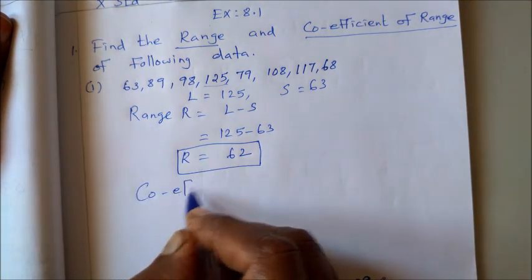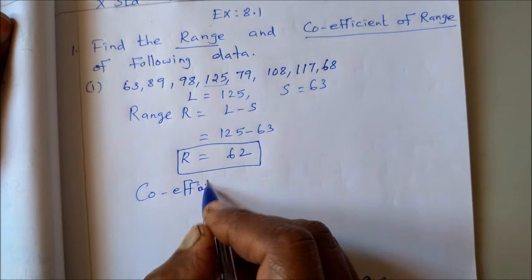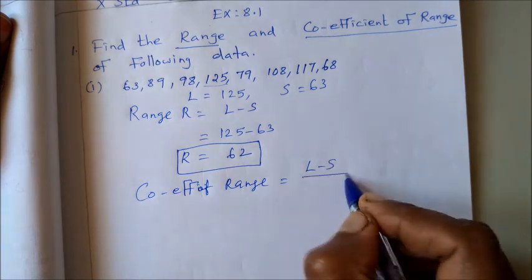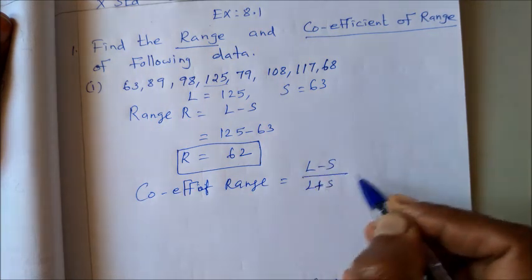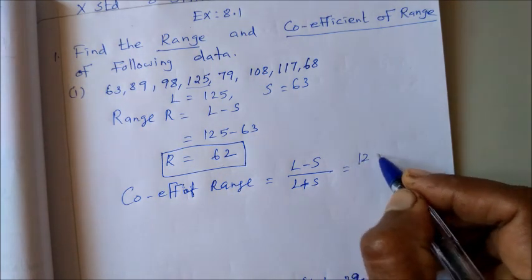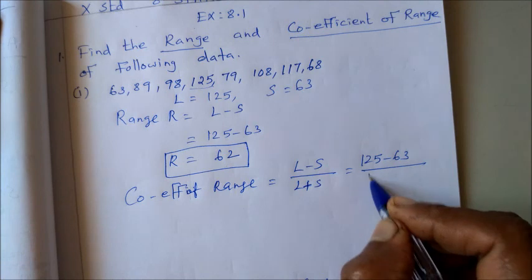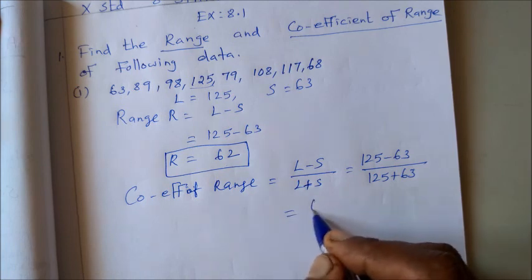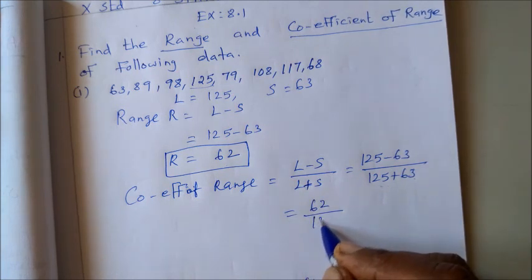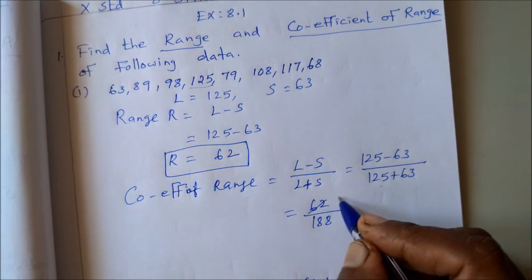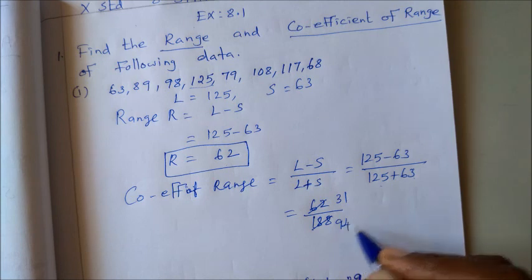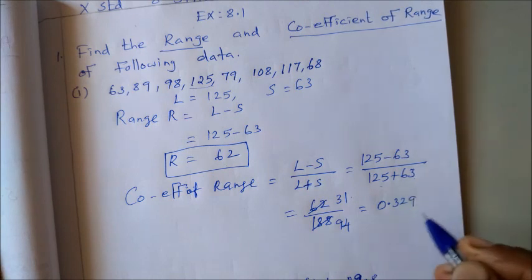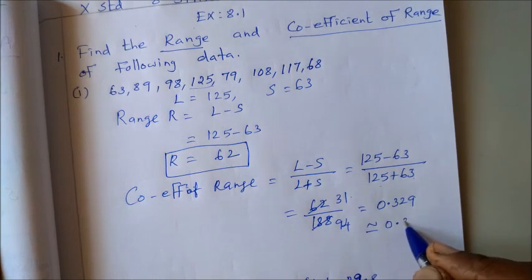Then coefficient of range. Coefficient of range equals the formula is L minus S divided by L plus S. So you can add the formula values. This equals 125 minus 63 divided by 125 plus 63. So subtract, that's 62 divided by 188. Simplify, that's 31 divided by 94. So 31 divided by 94 equals 0.329. Approximately we take it as 0.33.